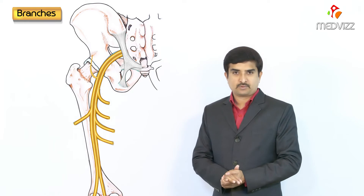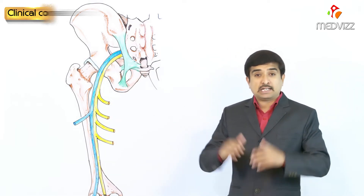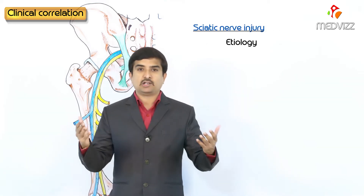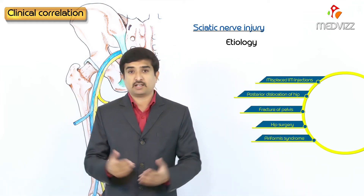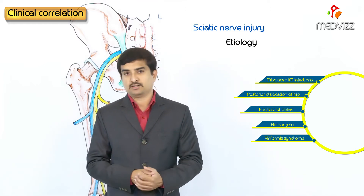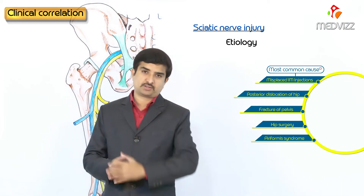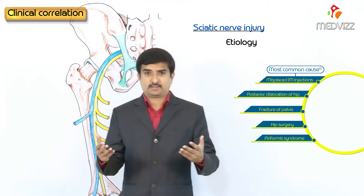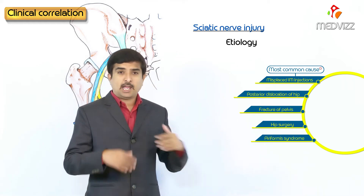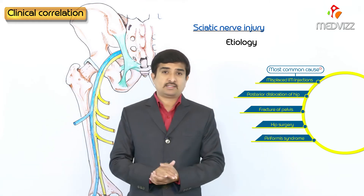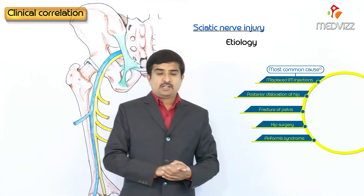The clinical correlation of sciatic nerve injury: the sciatic nerve is the most common nerve to get injured by intramuscular injections in the gluteal region, which is the most common cause. Other causes include posterior dislocation of the hip, fracture of the pelvis, and hip surgery, all of which can cause sciatic nerve injury.